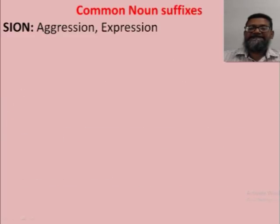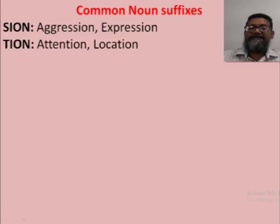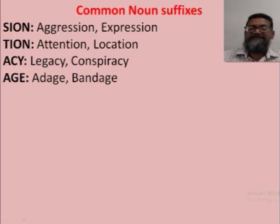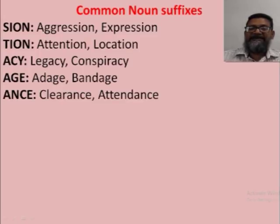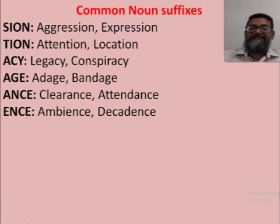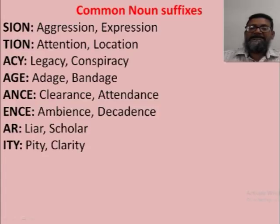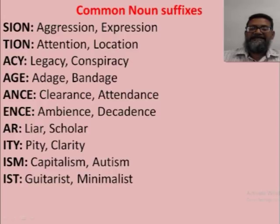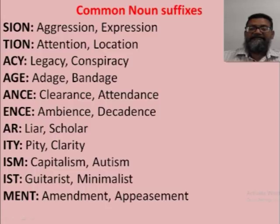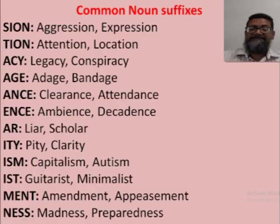Let's look at common noun suffixes: -SION (aggression, expression), -TION (attention, location), -ACY (legacy, conspiracy), -AGE (adage, bandage), -ANCE (clearance, attendance), -ENCE (ambiance, decadence), -AR (liar, scholar), -ITY (pity, clarity), -ISM (capitalism, autism), -IST (guitarist, minimalist), -MENT (amendment, appeasement), -NESS (madness, preparedness). There are dozens more suffixes that create nouns — these are the common ones. Take a note and revise them.